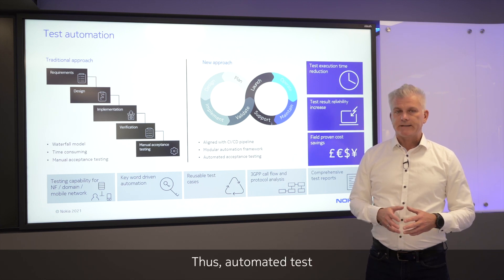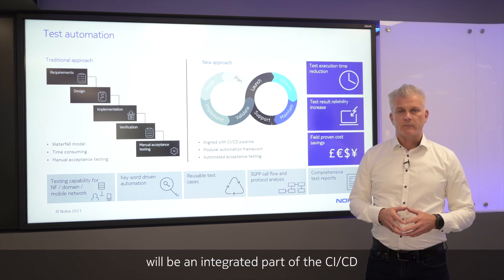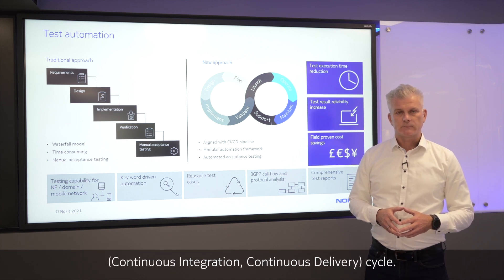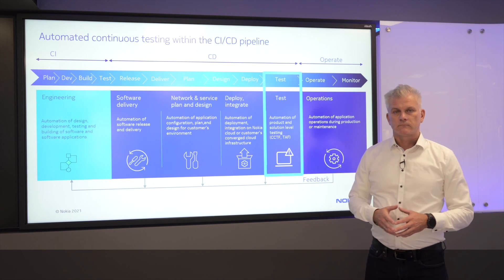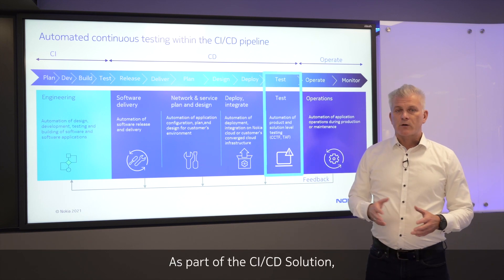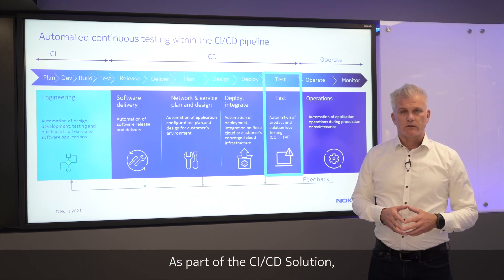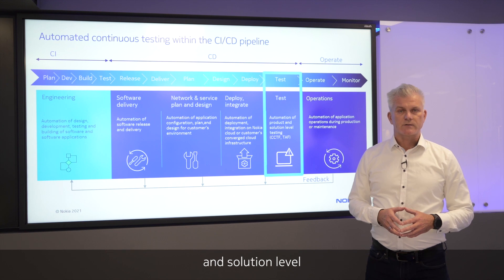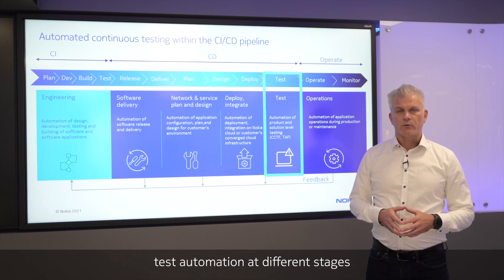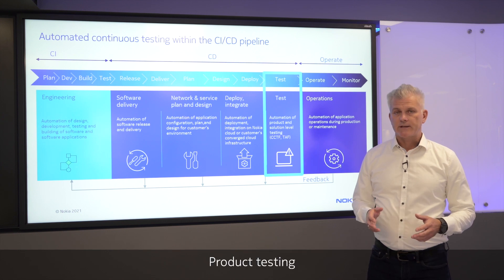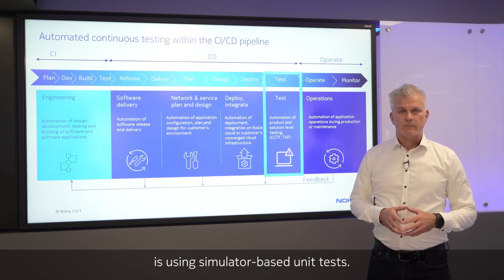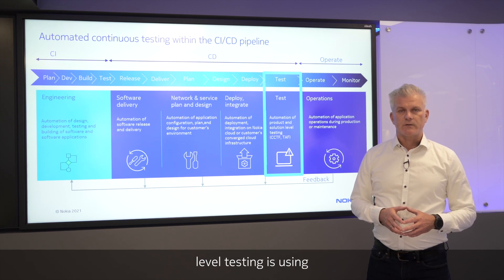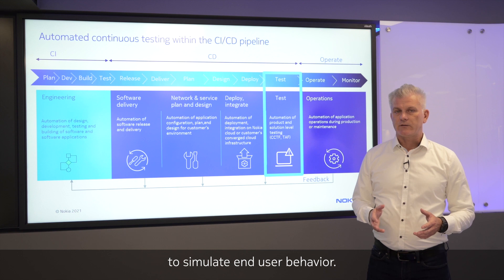Continuous and automated test execution will become a key building block of the software lifecycle. Thus automated test will be an integrated part of the CICD cycle. As part of the CICD solution, Nokia is providing product and solution-level test automation at different stages of the pipeline. Product testing is using simulator-based unit tests, whereas solution-level testing is using real user equipment to simulate end-user behavior.